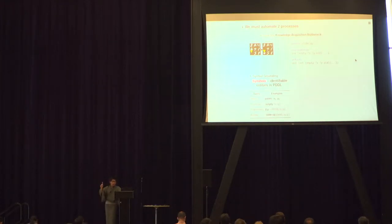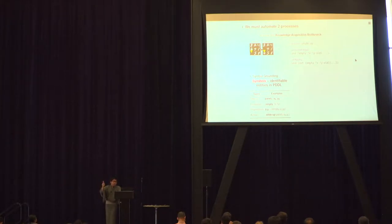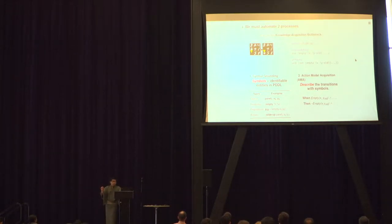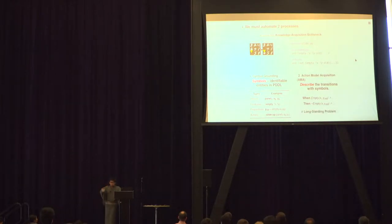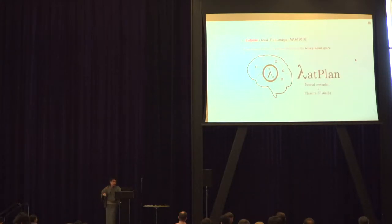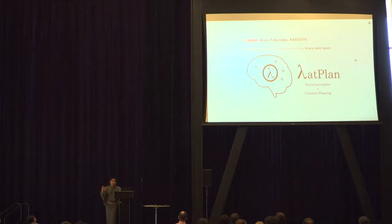The first process is symbol grounding, where symbol in this presentation specifically means identifiable entities in PDDL, like objects, predicates, propositions, and actions. The second is action model acquisition, which describes the transitions using the symbols found by the previous process. The system that solves these two is the Latent Space Planner I proposed at AAAI-18 — a planner that runs in a binary latent space embedded inside neural perception.